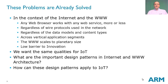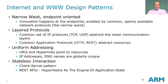We want the Internet of Things to scale and to encompass a large number of different protocols and work with any software, any service, any device. So what are the important design patterns that led the Internet and World Wide Web to have these qualities, and how can we apply these to the Internet of Things?